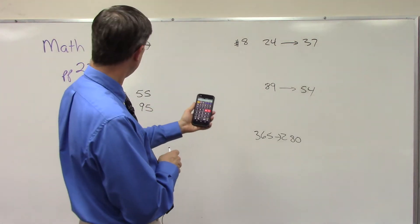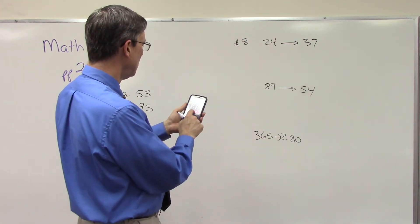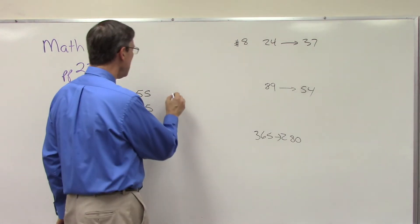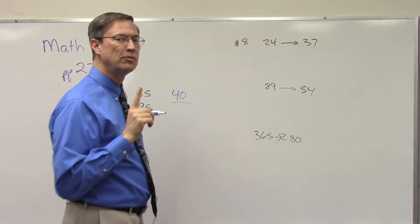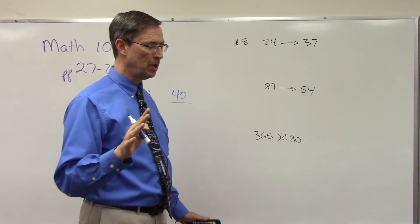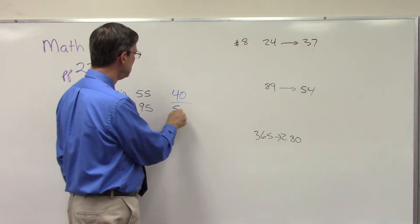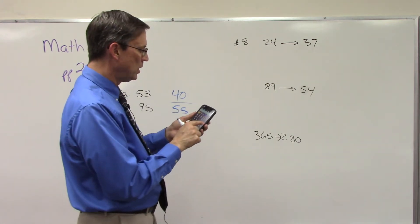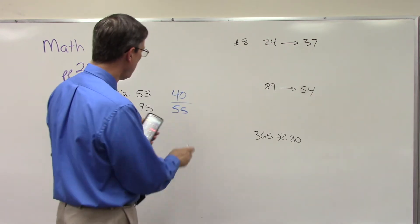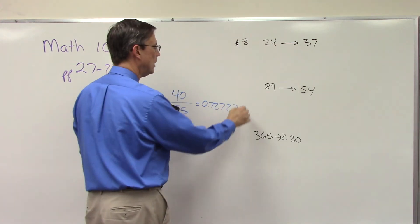With my handy-dandy calculator I'm going to do 95 minus 55 — the answer is 40. And then we always, always, always divide by the original number. Not the smaller number, not the bigger number — always the original number. The original number in this case was 55. So we take 40 and divide by 55, and I get 0.7272 repeating.